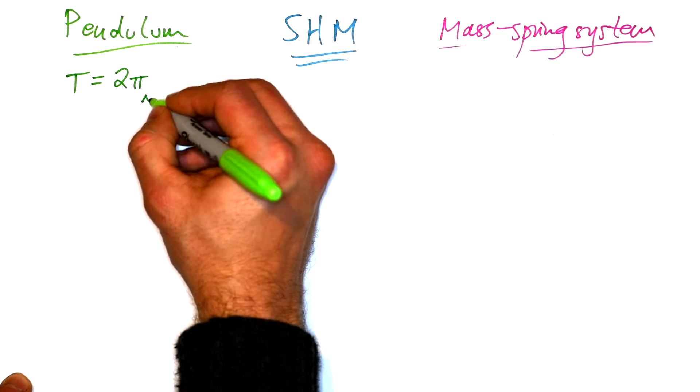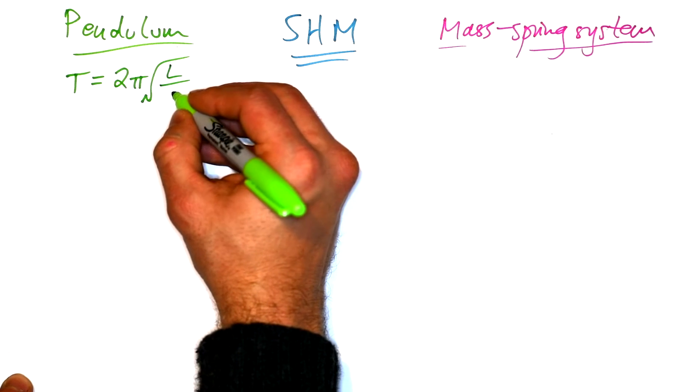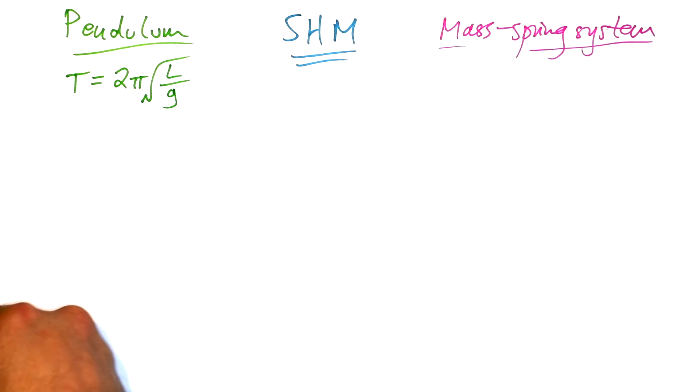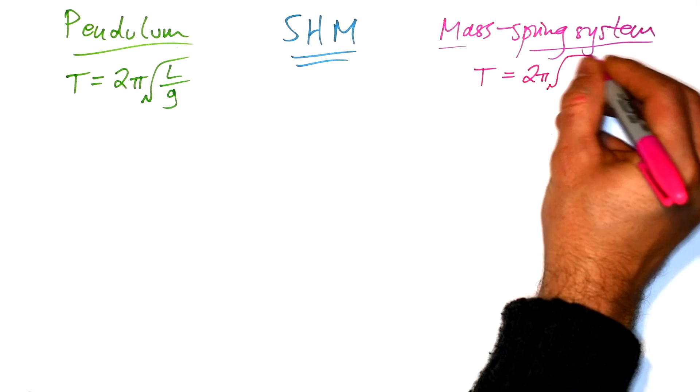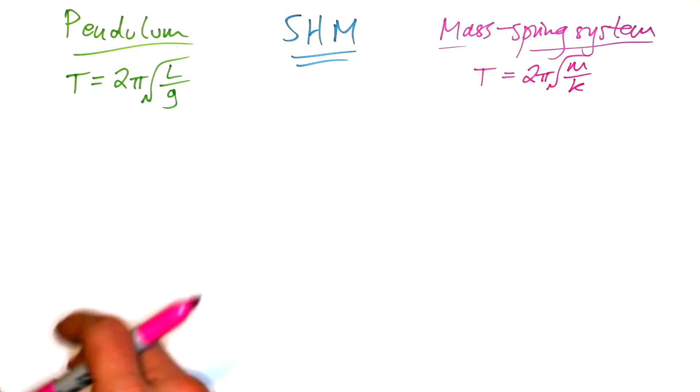Time period of a pendulum is given by 2π times the length of the string divided by g. And for a mass spring system, 2π times m over k, where m is the mass on the spring and k is the spring constant.